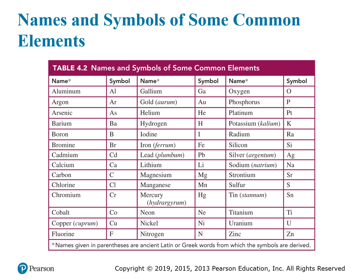There are other symbols which come from their Latin or Greek names. For instance, gold — the Latin name for gold is aurum, so the symbol for gold is Au. Just like the symbol for silver comes from argentum, the Latin word for silver, and that's Ag. Iron is called ferrum in Latin, so it has the symbol Fe. Lead is plumbum, so it has the symbol Pb.